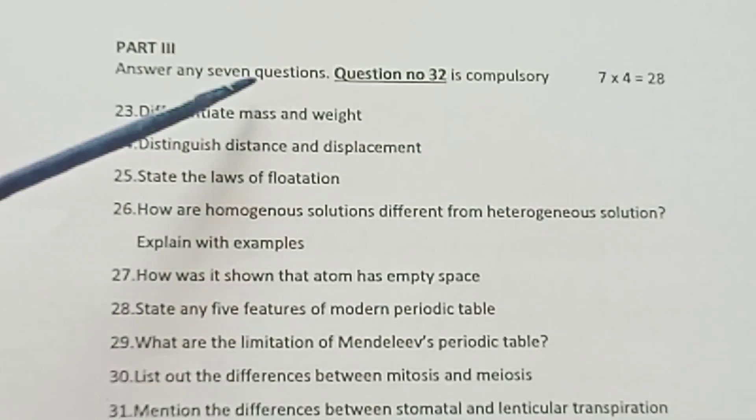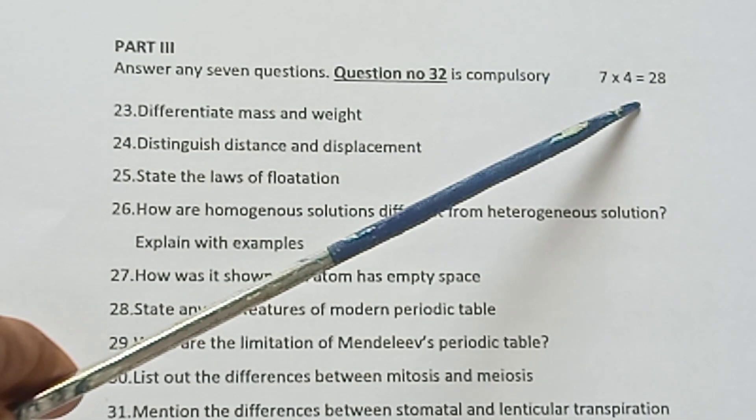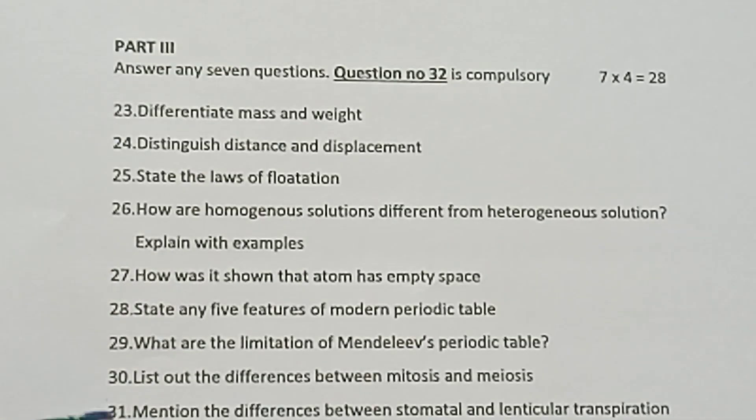Part 3: Answer any seven questions. Question number 32 is compulsory. 7 into 4 equals 28 marks. Question 32 is compulsory, and you have to select any six questions.